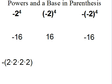In the second example, the base is negative 2. So it's going to be negative 2 times negative 2 times negative 2 times negative 2, which, if you multiply that out, the negatives keep canceling each other out to get positive 16.